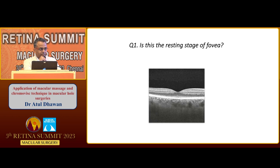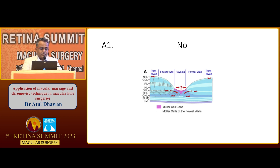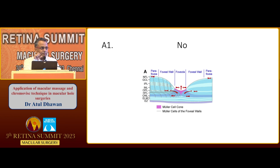Question number one: is this the resting stage of the macula? The answer is a big no. There is a constant tug-of-war going on at the fovea. Centripetal forces of the foveal Müller cone cells are there, which are opposed by the centrifugal forces of the nerve fiber layer and anterior-posterior forces of the partially detached vitreous. At this time, centripetal forces are more — that's why the fovea is intact and U-shaped.